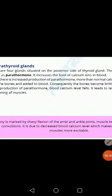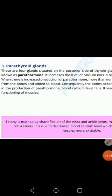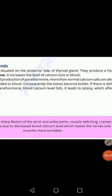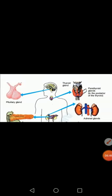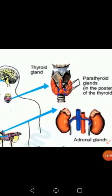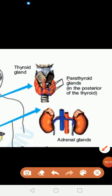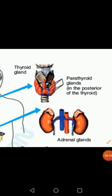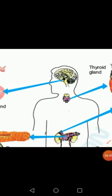The next gland is the parathyroid gland. It is also situated in the neck region on the posterior side of the thyroid gland. These glands are basically four in number and are present in the neck region on the posterior side.